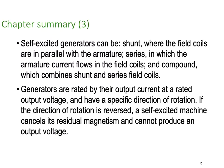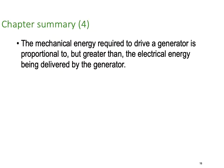So if you get the rotation on a DC machine the wrong way, it will cancel out its own excitation and won't ever build up to restart. The mechanical energy required to drive a generator is proportional to, but greater than, the electrical energy being delivered by the generator, because of the losses.